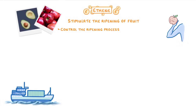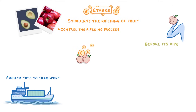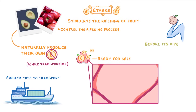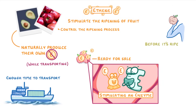By purposely picking the fruit before it's ripe, we have enough time to transport it to where it needs to go, and once it's there we can expose it to ethene so that it quickly ripens and is ready for sale. Most plants naturally produce their own ethene, and we often block its effects during transport so that it doesn't ripen too early. At the cellular level, ethene works by stimulating an enzyme that causes the fruit to ripen.